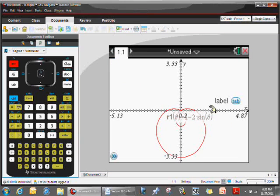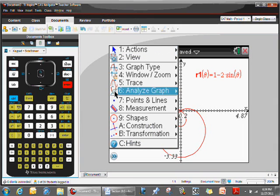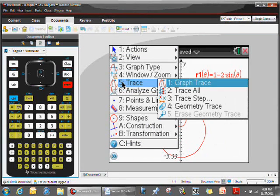Good looking limacon graph there with the inner loop. And our job is to find out what the area is of that inner loop. Well, as I said before, the best way to figure out these angle measures is to do a trace of the graph. And your utility should allow you to do that.